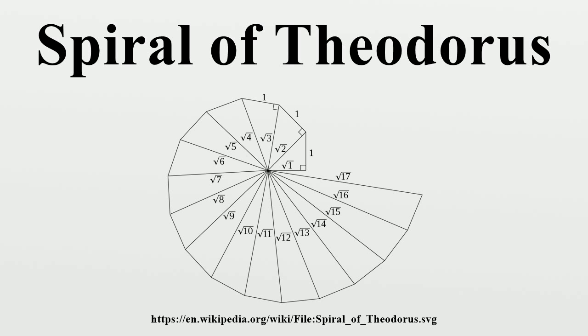Each of the triangles' hypotenuses gives the square root of the corresponding natural number, with h₁ equal to √2.